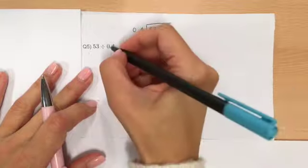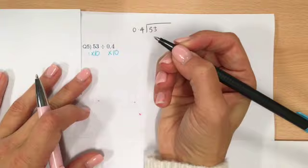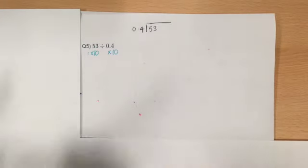So, to make this a whole number, I'm going to times it by 10, and I'm going to do the same to this one. So, I'm just going to make the calculation 10 times bigger.